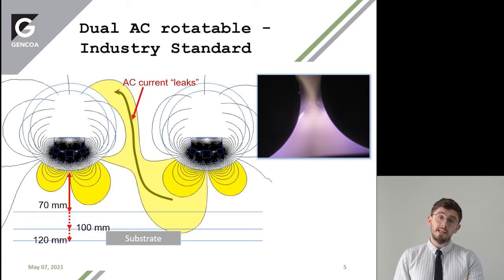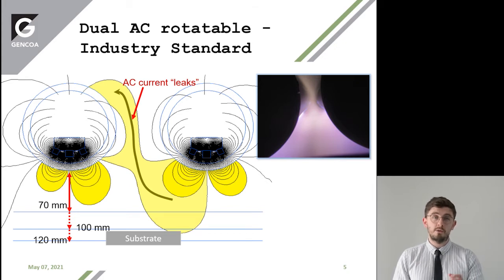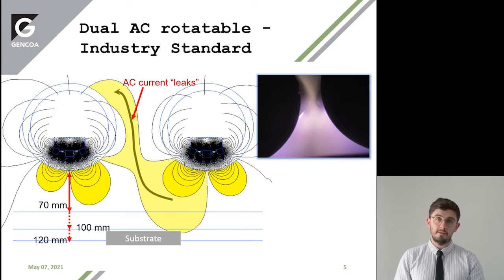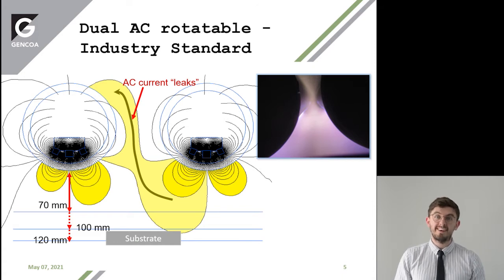The electrons will leak to the rear side of your target, which you don't want. You want to keep your plasma near the substrate to enhance ion bombardment, as well as keeping the plasma there to sputter as much of the target as you can.